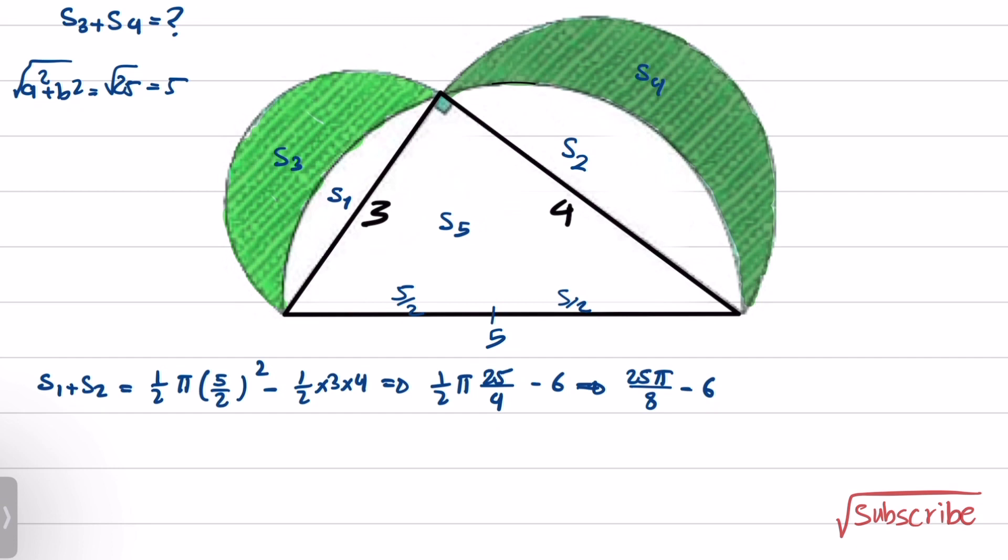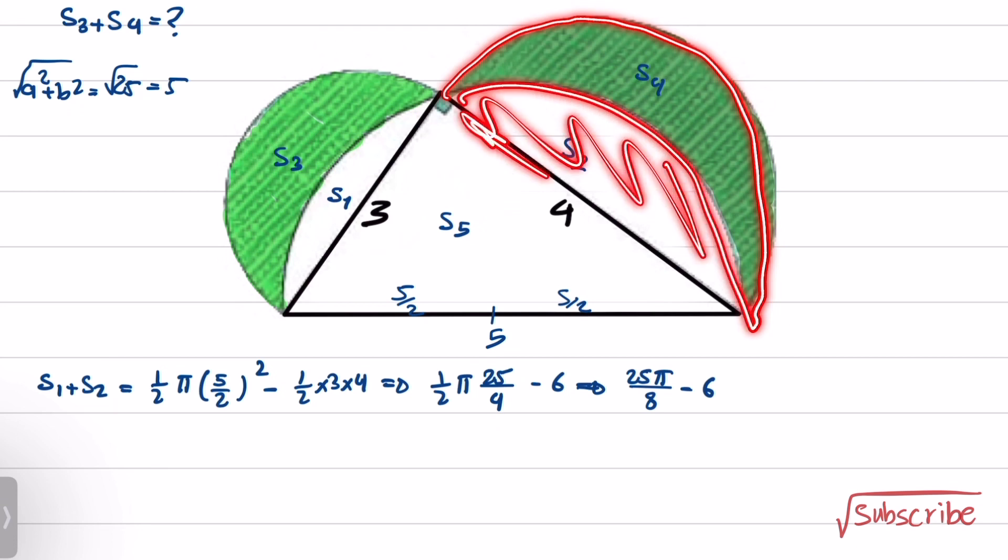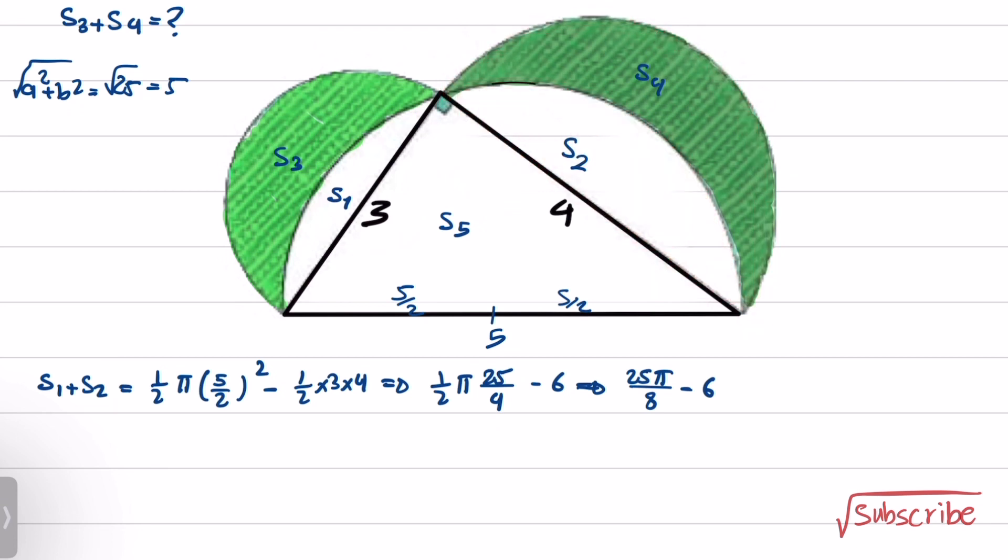Now that we have S1 and S2, we have to subtract S1 from this half circle to obtain S4. S3 plus S4 is equal to this half circle. The radius of this half circle is 3/2. So we have 1/2 π times (3/2)² minus S1, plus the same thing for this side.